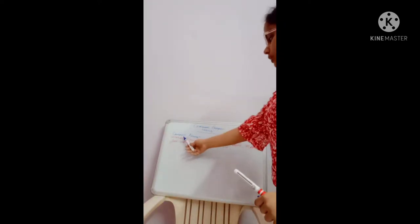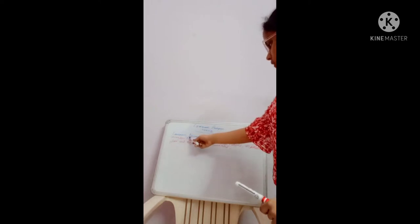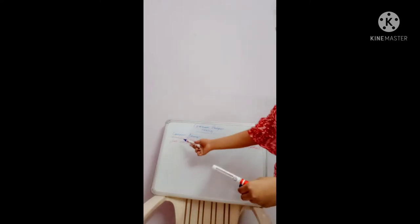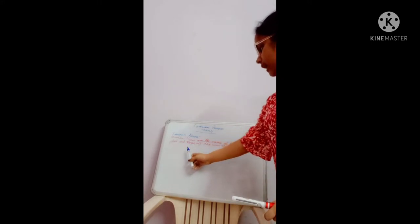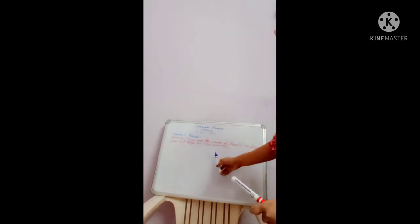So first we will learn common nouns. Common nouns are the names of people, place, animals and things of same type.